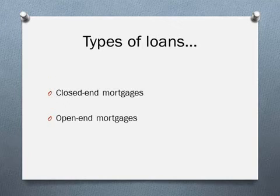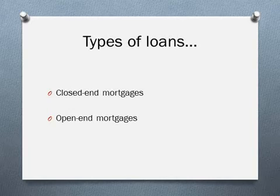The types of loans that are covered by Reg Z are both closed-end mortgages — those having an end date — and open-end loans, which would be more like HELOCs or those types of loans that don't have a fixed payment or an end date.